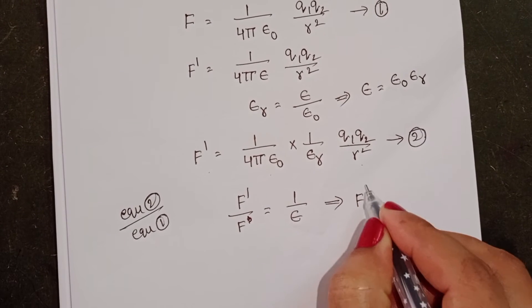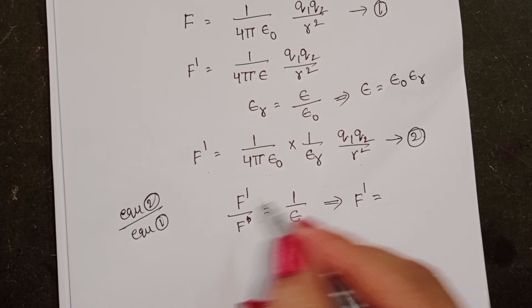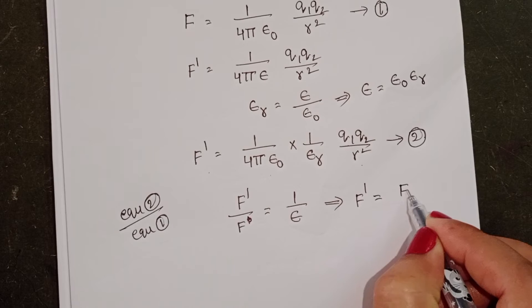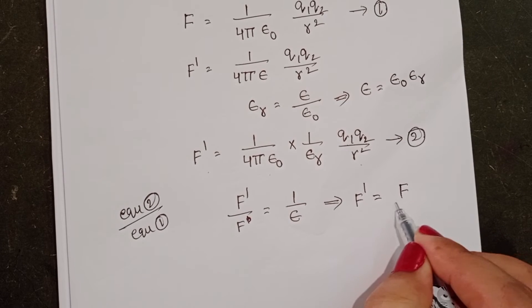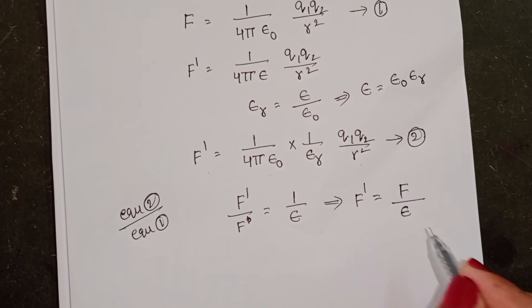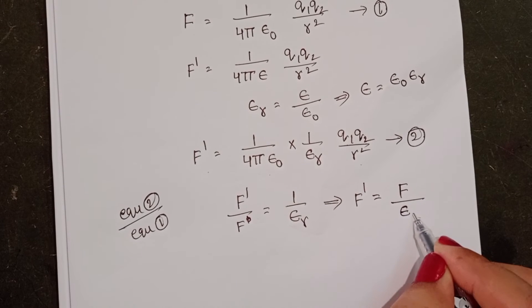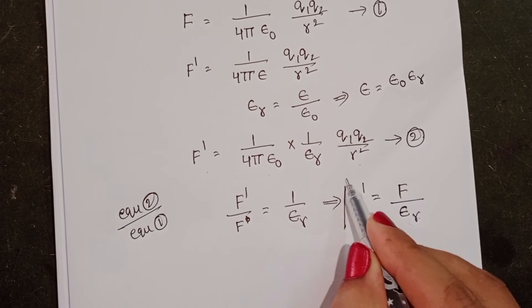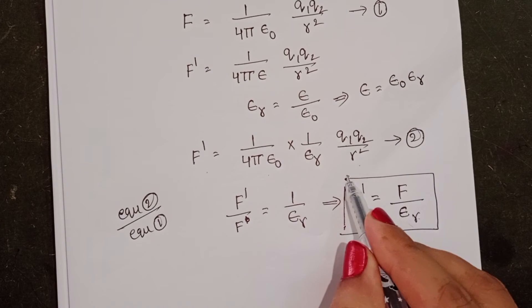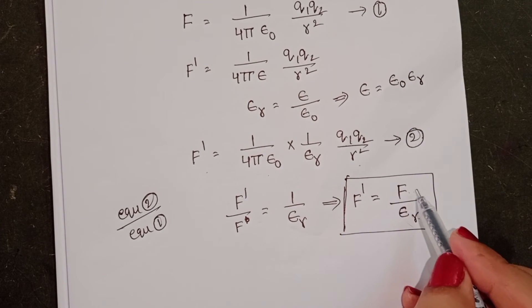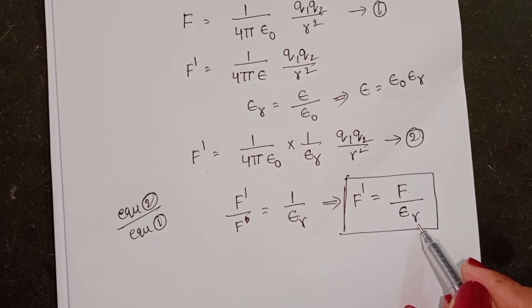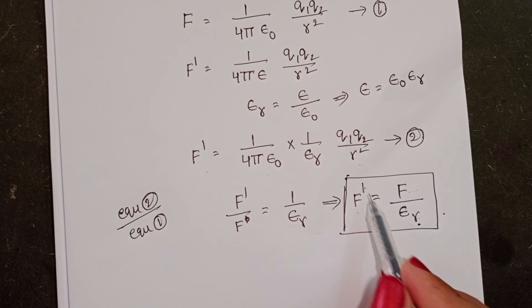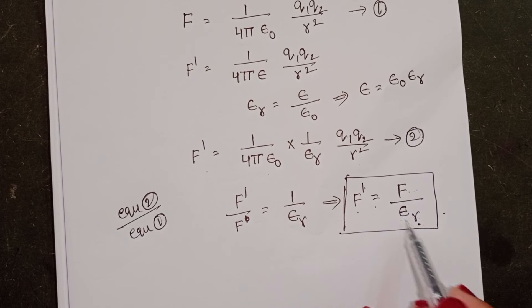And from this, force between the two charges when placed in any medium is equals to force in vacuum or air by relative permittivity of the medium. So remember this formula: when we know the force between the two charges when placed in air, and also we know the relative permittivity, then take this formula, f dash equals to f by epsilon r.